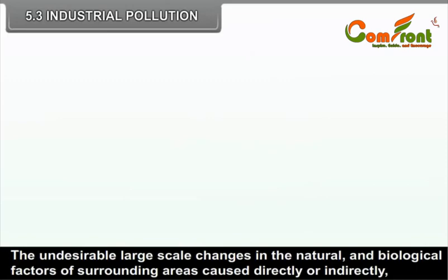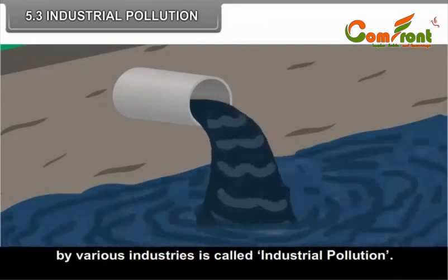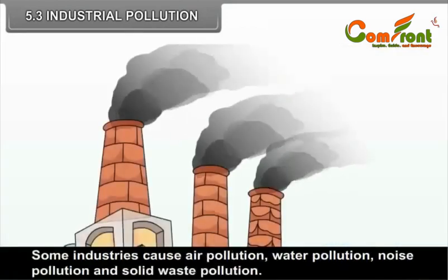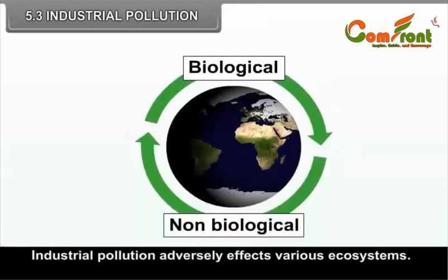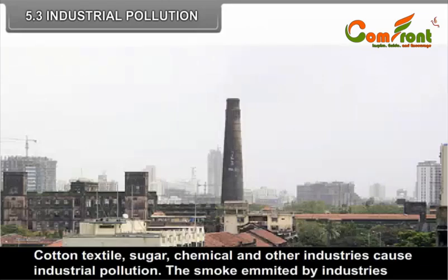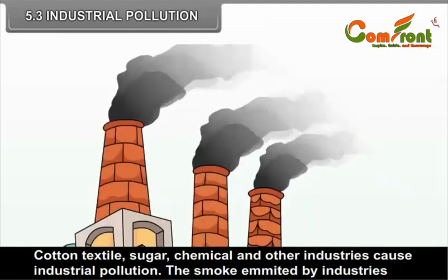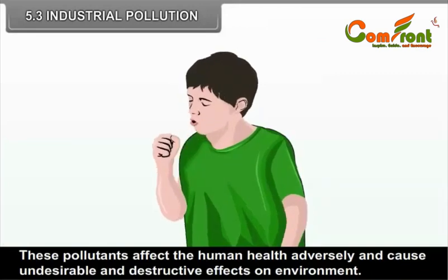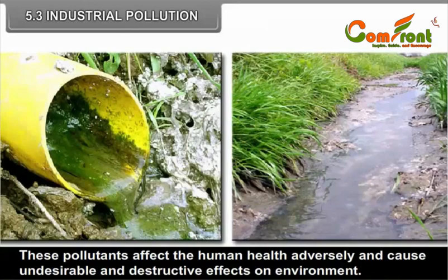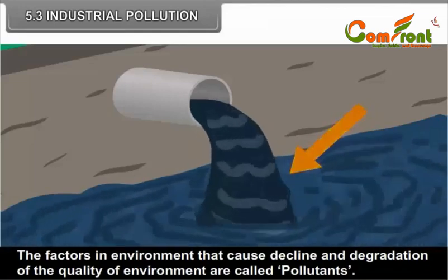5.3 Industrial Pollution. The undesirable large-scale changes in the natural and biological factors of the surrounding areas caused directly or indirectly by various industries is called industrial pollution. Some industries cause air pollution, water pollution, noise pollution and solid waste pollution. Industrial pollution adversely affects various ecosystems. Cotton textile, sugar, chemical and other industries cause industrial pollution. The smoke emitted by industries, water and solid waste contain pollutants. These pollutants affect human health adversely and cause undesirable and destructive effects on the environment. The factors in the environment that cause decline and degradation of the quality of environment are called pollutants.